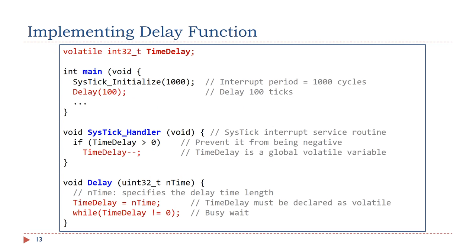This example demonstrates how to use SysTick to implement a delay function. We first define a global volatile variable named time_delay. The interrupt service routine of the system timer, SysTick_Handler, decrements the time_delay variable by 1 each time a SysTick interrupt takes place. The delay function initializes the time_delay variable and waits until time_delay is decremented to 0 by SysTick_Handler.